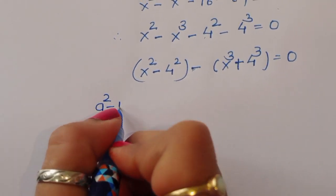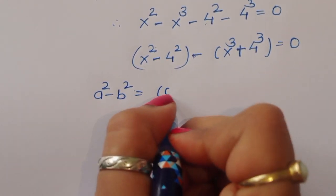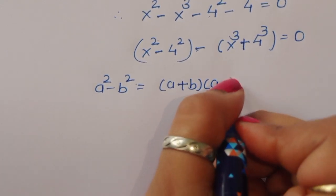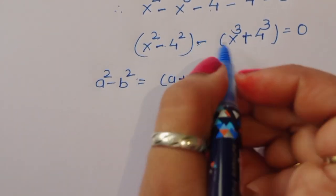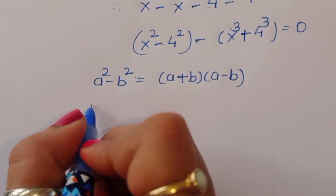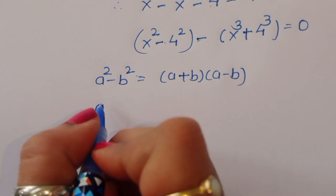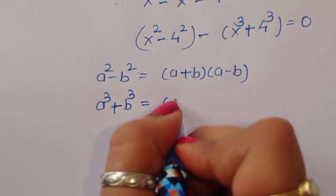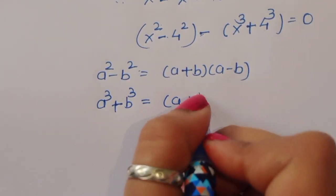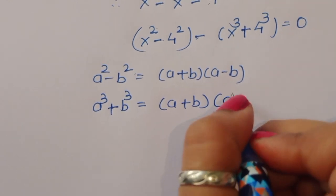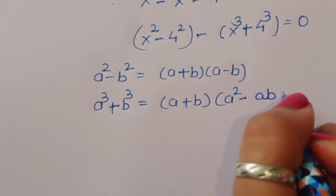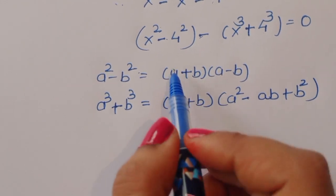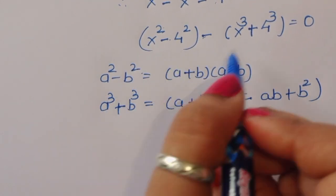The first formula: a squared minus b squared is equal to (a + b)(a − b). The next one: a cubed plus b cubed is equal to (a + b)(a squared minus ab plus b squared). These are the two formulas we will use.